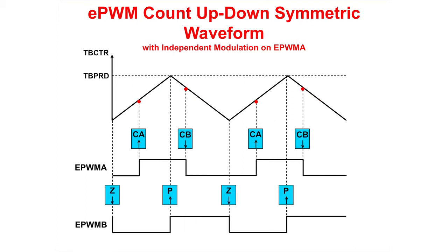And finally, again using different output actions on the up count and down count, we have the EPWM-B output set high on the compare A up count match and clear low on compare B down count match. The EPWM-B output will clear low on zero match and set high on period match.